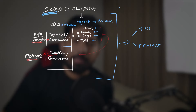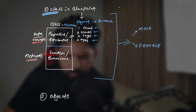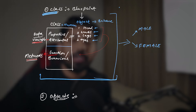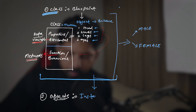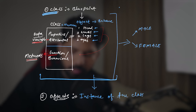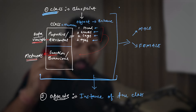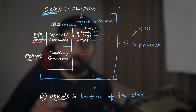That was the class. Now let's move to objects. Objects are simply the instance of the class. Philosophically, God created the human class. Whenever a human being is born, he or she is an object.